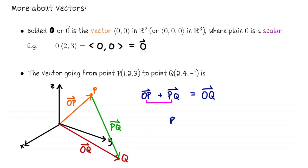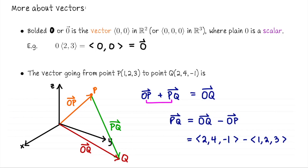PQ is what we actually want, so the vector PQ equals OQ minus OP. If OQ is the position vector for point Q, its coordinates are the same as Q, so that's the vector 2, 4, negative 1. Likewise, OP has coordinates 1, 2, 3. So the vector from P to Q has coordinates 2 minus 1, 4 minus 2, negative 1 minus 3, giving us 1, 2, negative 4. You don't have to go through this process in the future — to get from P to Q, just do Q minus P, i.e., the coordinates of Q minus the coordinates of P.